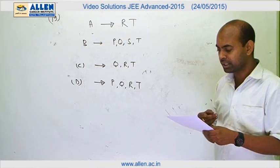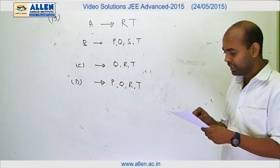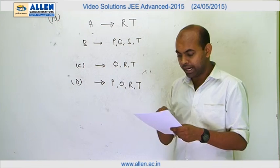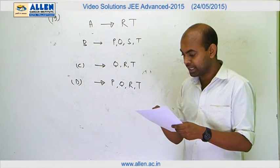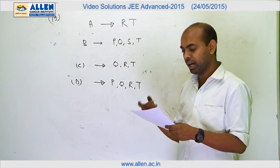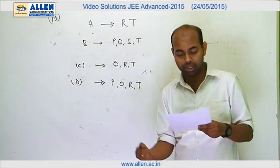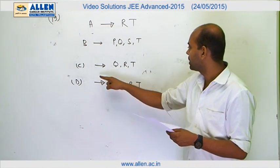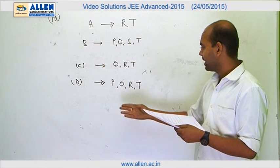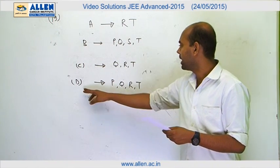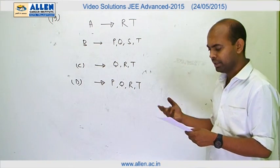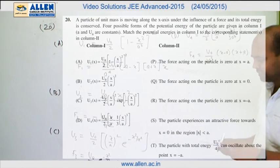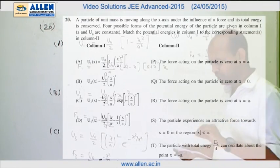Neutrino emission occurs in all four parts. For beta decay, cobalt undergoes nuclear fission and R is energy production. In the case of energy production of stars, nuclear fusion and beta decay occur, so the answer for C is QRT. Similarly, the answer for D is PQRT.